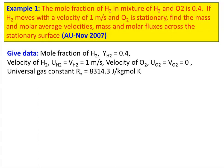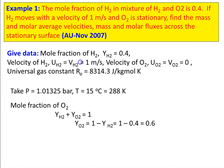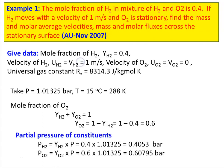The velocity of H2: UH2 = VH2 = 1 meter per second, where UH2 is the molar velocity and VH2 is the mass velocity. Velocity of O2: UO2 = VO2 = 0 because it is stationary. Universal gas constant R0 = 8314.3 J/kg·mol·K. We take pressure = 1 atm and temperature = 15°C = 288 K. Mole fraction of O2: YO2 = 1 − YH2 = 1 − 0.4 = 0.6.